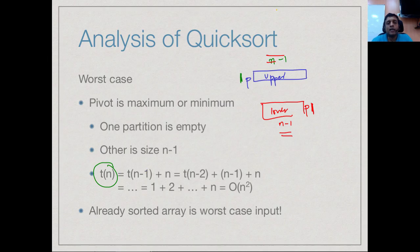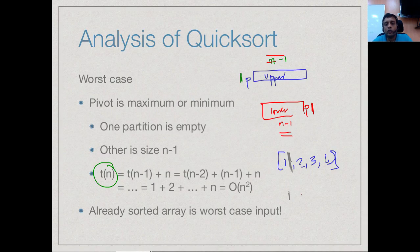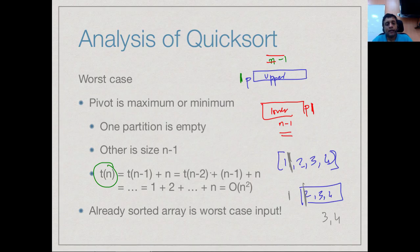For example, suppose we start with an already sorted array like 1, 2, 3, 4. We pick 1 as a pivot and this results in us wanting to sort 2, 3, 4. Then I will pick 2 as a pivot and this results in us wanting to sort 3, 4, and so on. If I have an already sorted array, in some sense the pivot is always an extreme value so the next step splits the array very badly. If we expand out this t of n equals t of n minus 1 plus n, we get the summation that we got for selection sort and insertion sort.